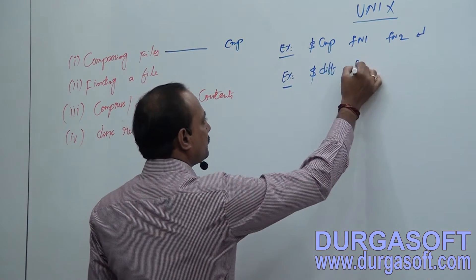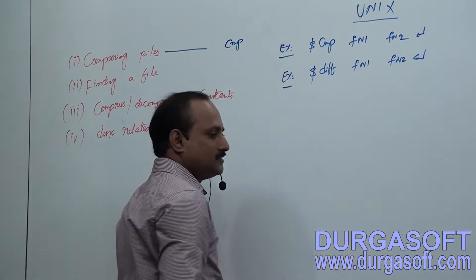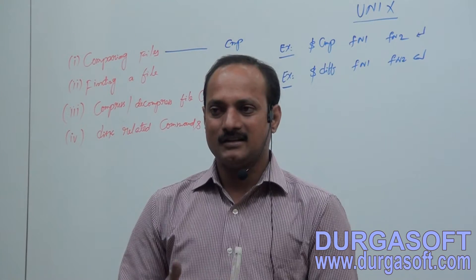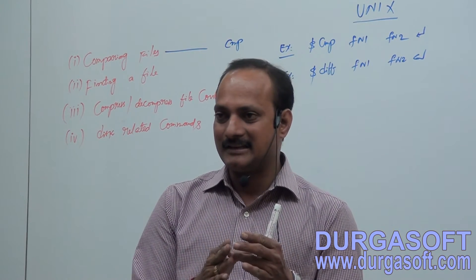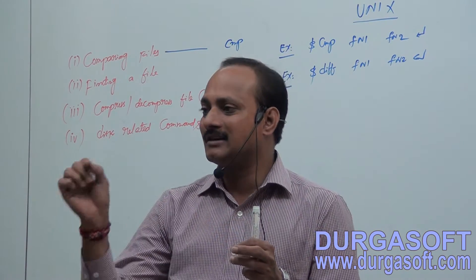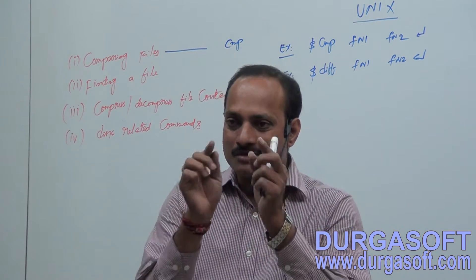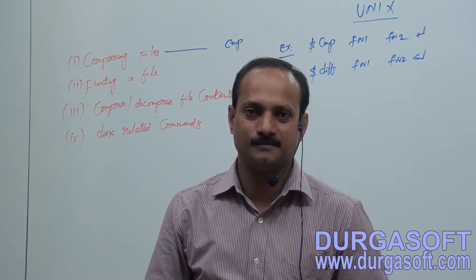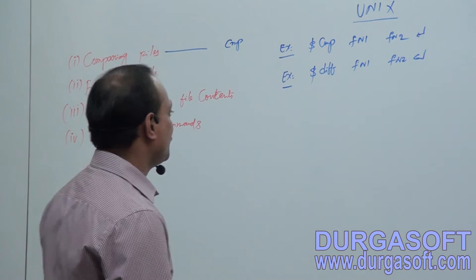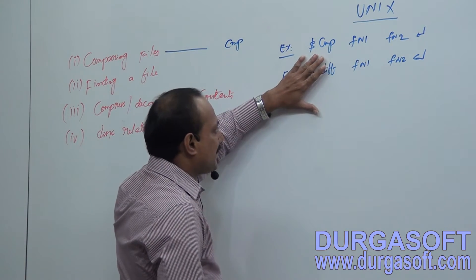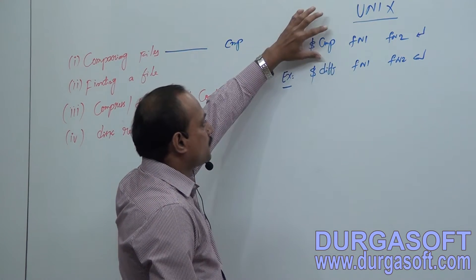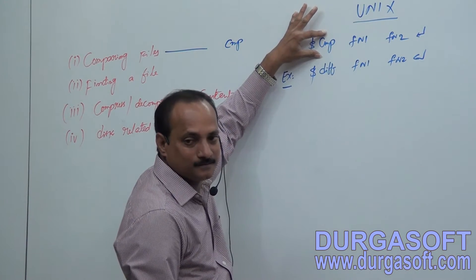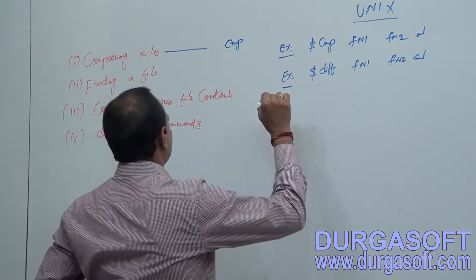The next command is diff, which shows differences between the first file and the second file. The diff command displays character-to-character, position-to-position differences — for example, if the third character in the first line differs between the two files, it shows that difference and its position. So, cmp tells you whether the total file is identical or not, while diff shows the detailed character-by-character differences.